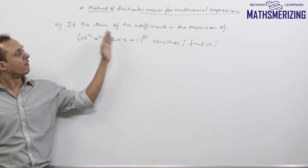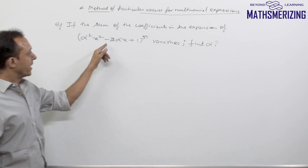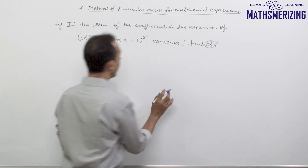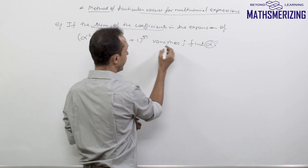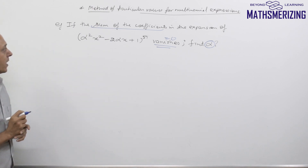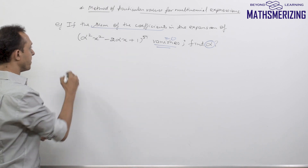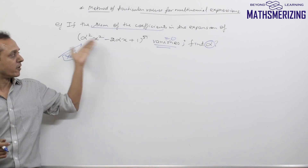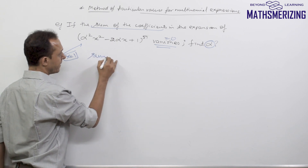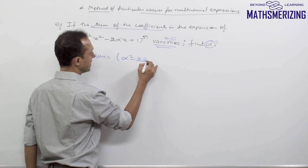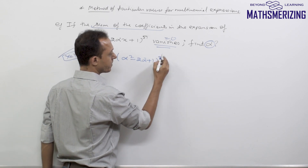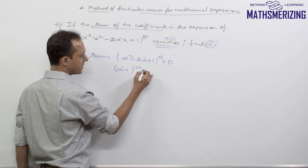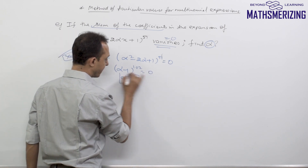The next question: if the sum of the coefficients in the expansion of (α²x² - 2αx + 1)^51 vanishes, find α. The sum of all coefficients vanishes means it equals 0. The only variable is x, so I put x = 1, giving (α² - 2α + 1)^51 = 0, which simplifies to (α - 1)^102 = 0. Therefore, the value of α is 1.